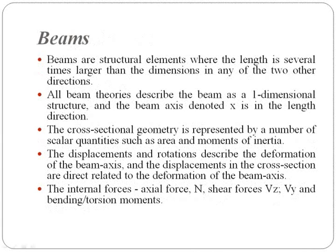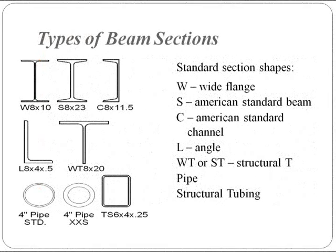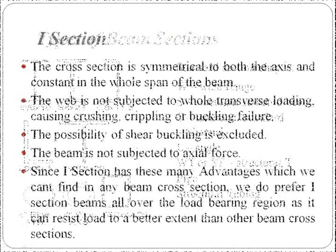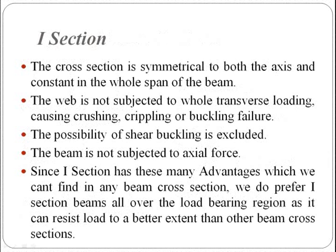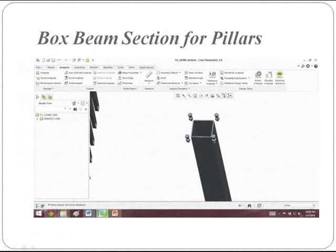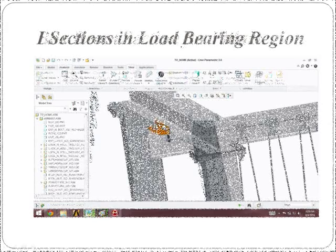Need for mobile gantry crane in industries: mobile gantry crane is used for many purposes. One of the major purposes is to transmit raw material from one place to another. In such cases they cannot prefer a normal gantry crane as it is too costly, needs a lot of time to create a setup, and is not portable. Hence the industry requires a portable gantry crane with a different design, one that should be easy to assemble and dismantle, and should bear a maximum load of 1500 kg with a considered factor of safety.